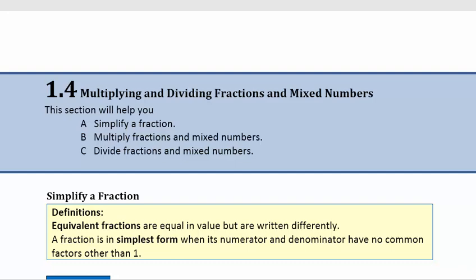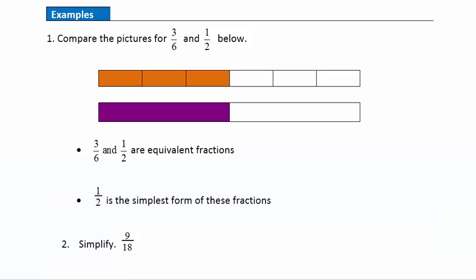Let's start with some definitions here under simplifying a fraction. Equivalent fractions are equal in value but are written differently. A fraction is in simplest form when its numerator and denominator have no common factors other than one. Now let's take a look at some examples that will help you understand equivalent fractions and simplest form.